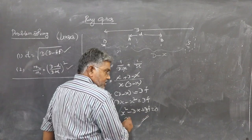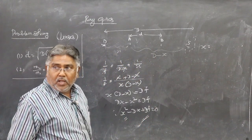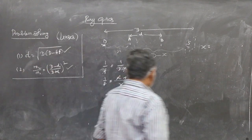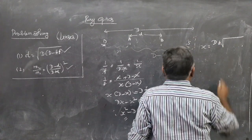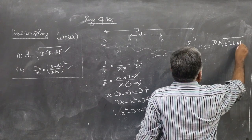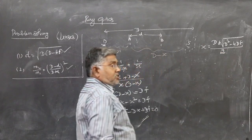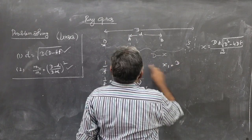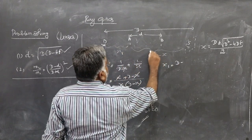This is a quadratic equation in x, so we solve for x using the quadratic formula: x equals (minus b plus or minus square root of b² minus 4ac) divided by 2a. Substituting, x equals (D plus or minus square root of (D² minus 4Df)) divided by 2. These are the two values of x, which we call x1 and x2.